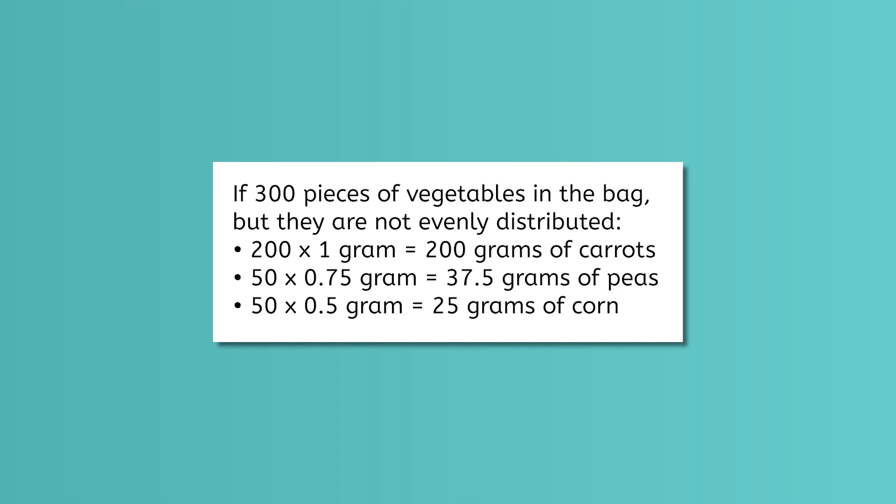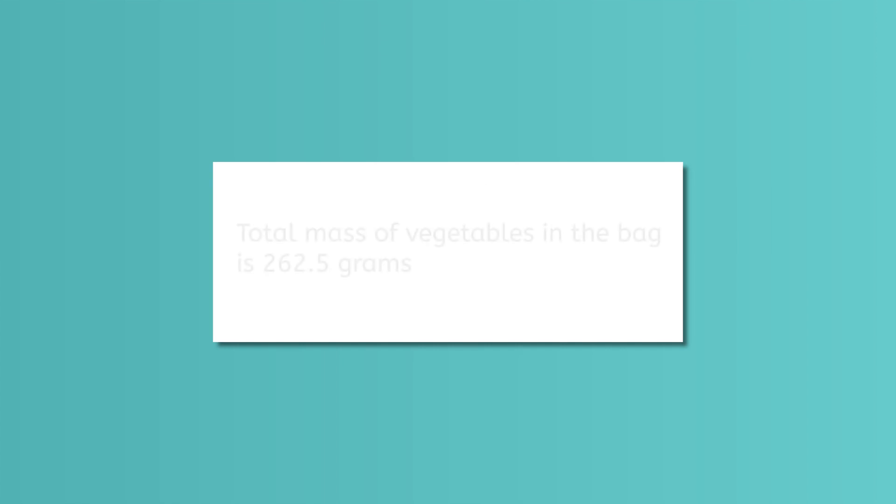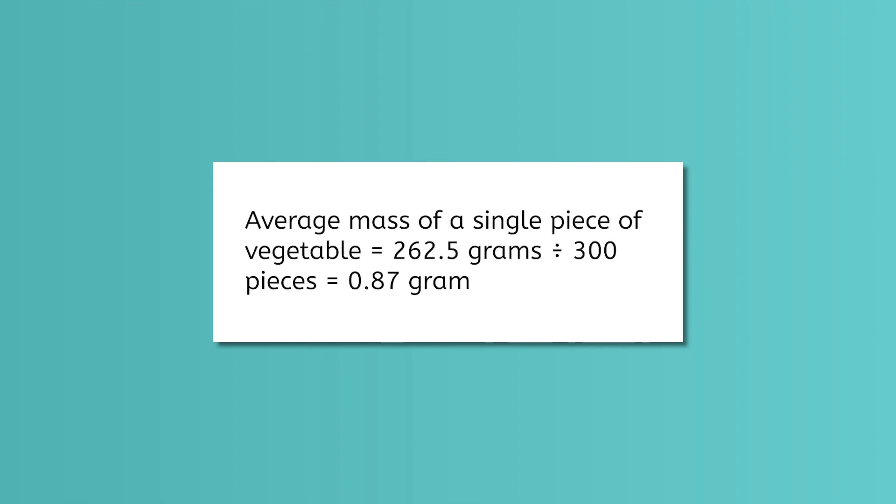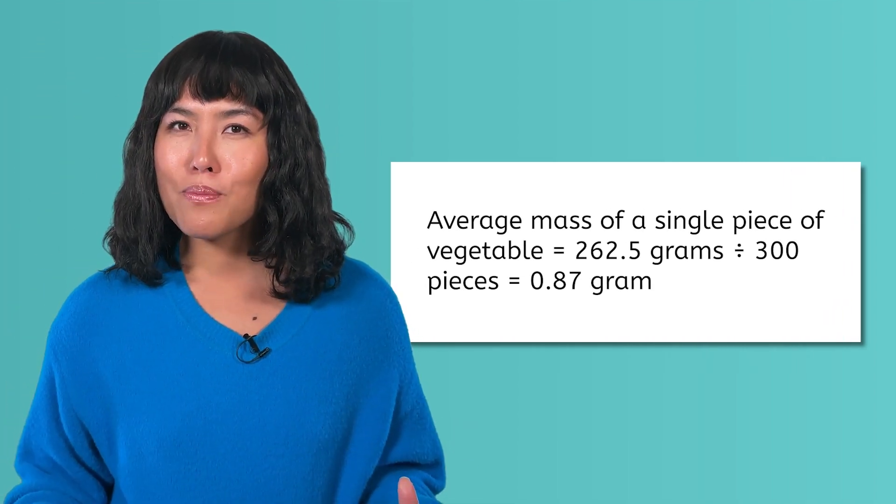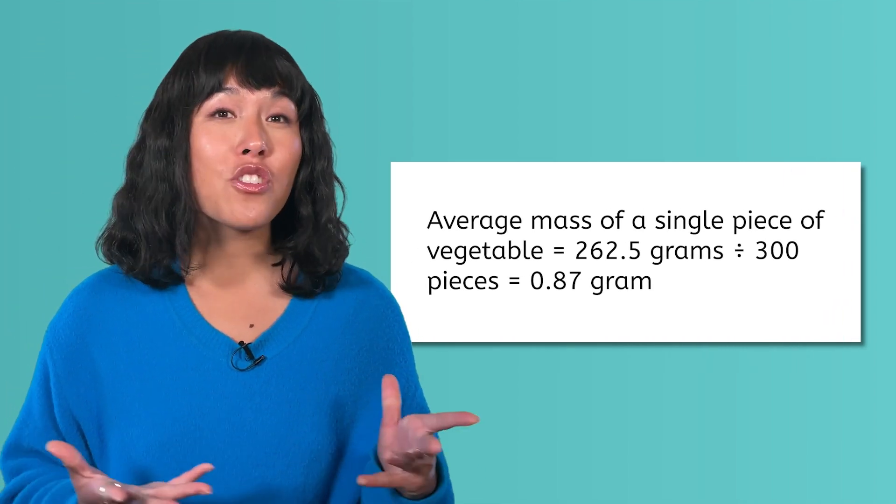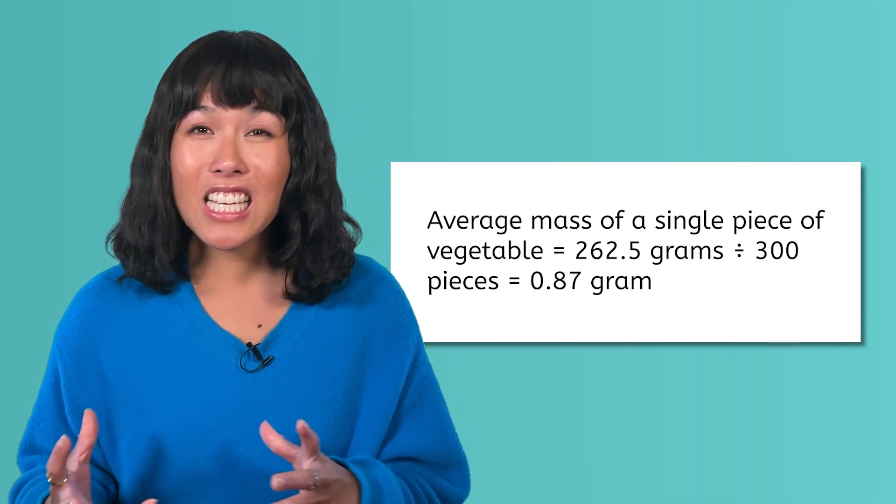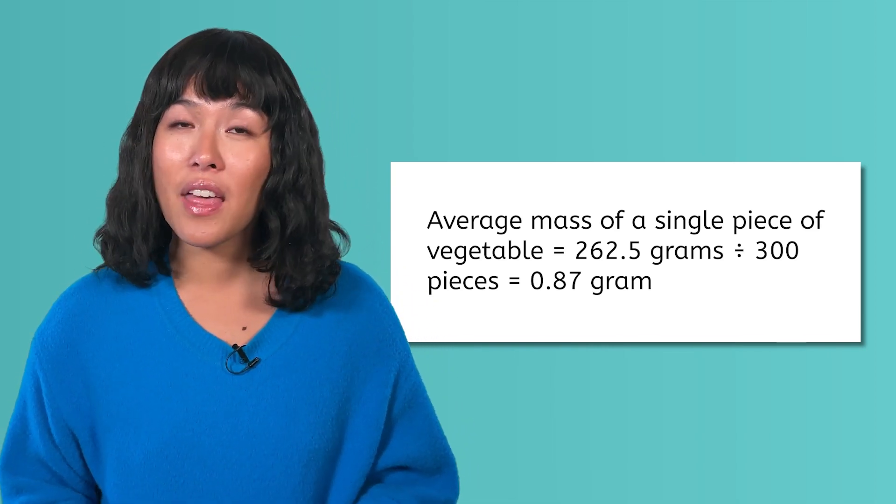And if we multiply the mass of corn, 0.5 gram, times the number of corn kernels, we get 25 grams. Adding them together, we get 200 plus 37.5 plus 25 grams, for a total of 262.5 grams. Divide the total mass by 300 for the total number of pieces of vegetables in the bag, and we get an average mass of 0.87 gram. Why is this average mass higher than the original average mass we calculated when there was an equal number of each vegetable in the bag?